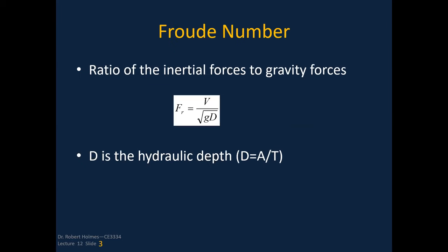The Froude number is the ratio of the inertial forces to gravity forces. Specifically, it's the mean velocity of the flow divided by the square root of G times the hydraulic depth. The hydraulic depth D is equal to area divided by the top width.